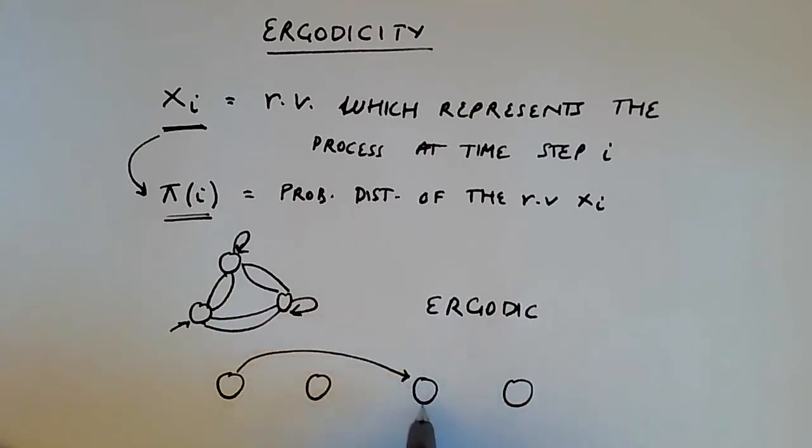which has two separable chains like this, then what's going to happen is if you started in this state, you would have a certain distribution.